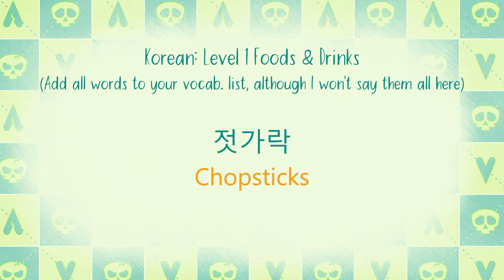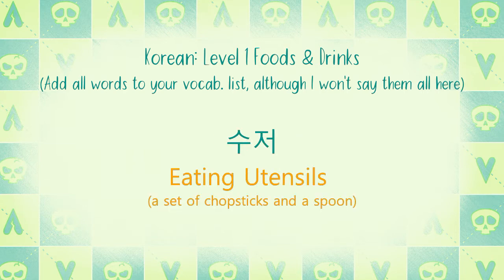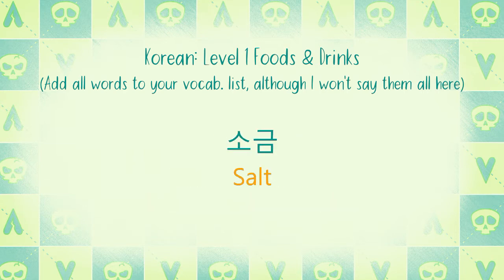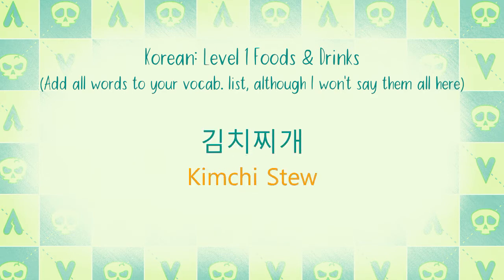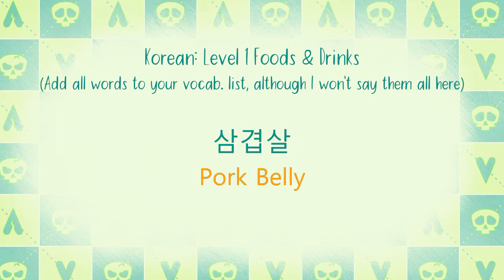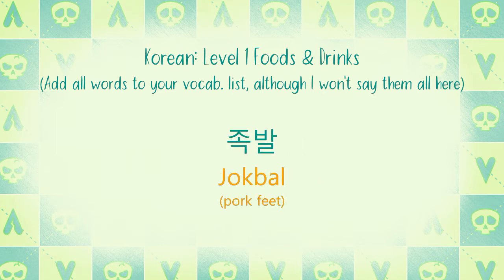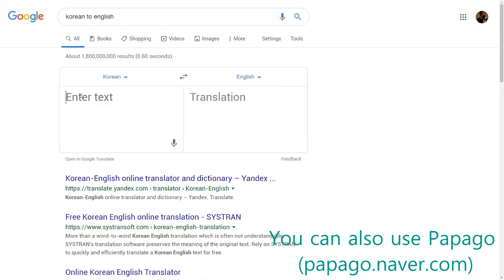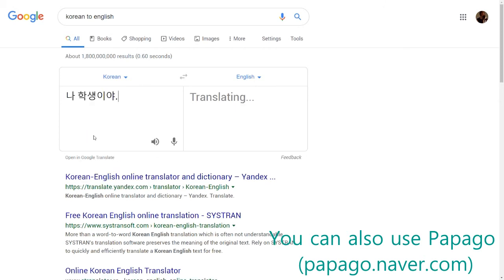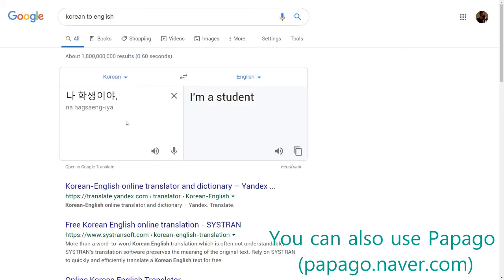좁시 젓가락 숟가락 수저 소금 후추 설탕 김치찌개 삼겹살 족발. For any of the words that I didn't say and you want to hear the pronunciation, you can copy and paste it from the tiny card deck into Google Translate and click the speaker icon.